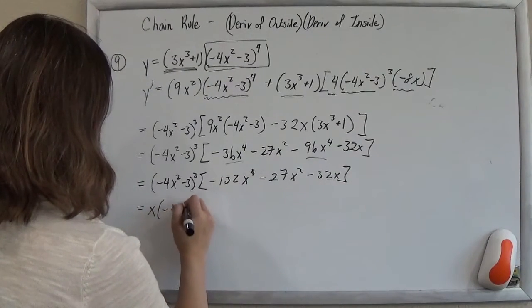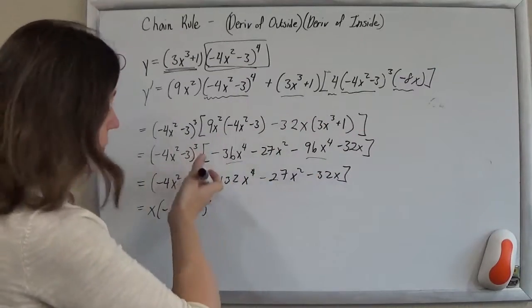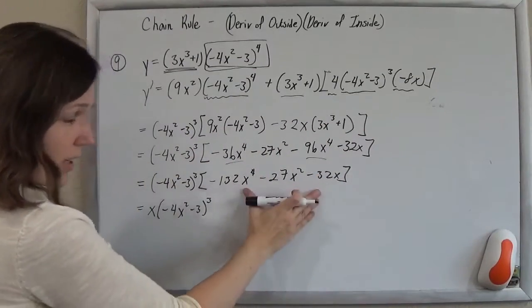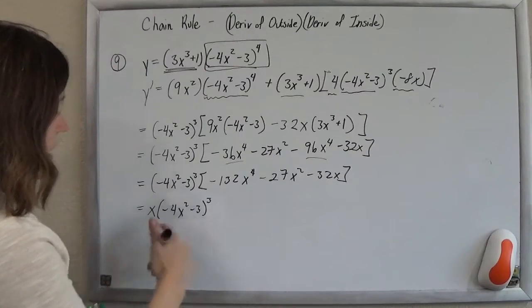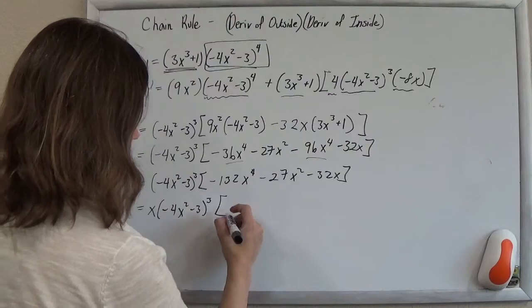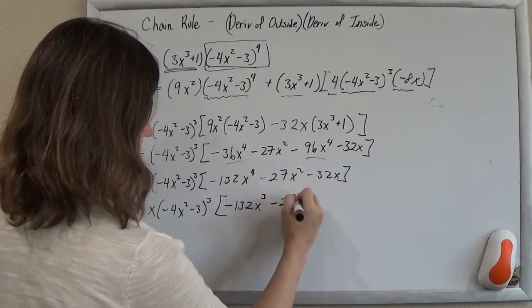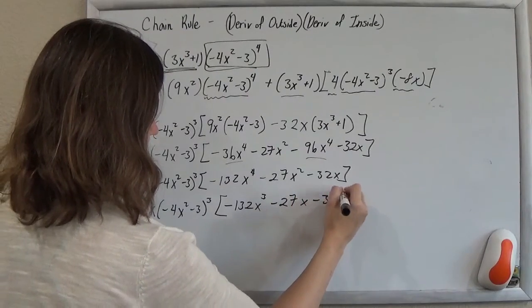So we've got an x out here. The thing is you kind of pull out as much as you can when you start and if you forget something, you can just look and see if it factors more at the end. So it would have been nice had I noticed that up there, but it's okay. And so now I'm going to get this minus 132x to the third minus 27x minus 32.